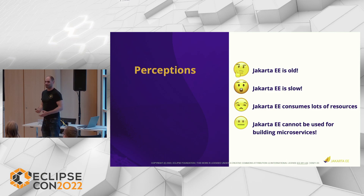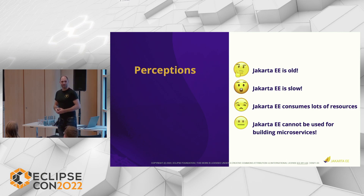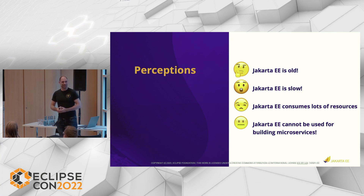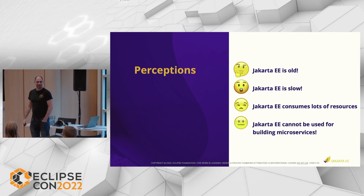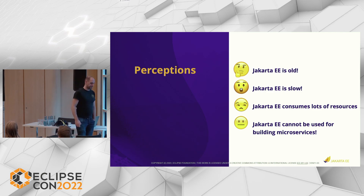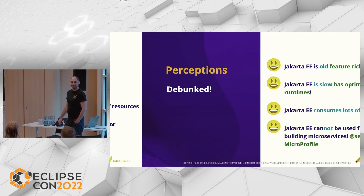We are here now with Jakarta EE and MicroProfile, and I've had very interesting conversations when using this stack for microservices — even though Jakarta and MicroProfile are marketed as cloud native Java. Why is that interesting? There's a perception from the past that Jakarta EE is old — true, it was founded 25 years ago — and that it's slow, consuming a lot of resources, making microservices impossible. These are things I sometimes hear, and admittedly there is some truth in that, but not everything.